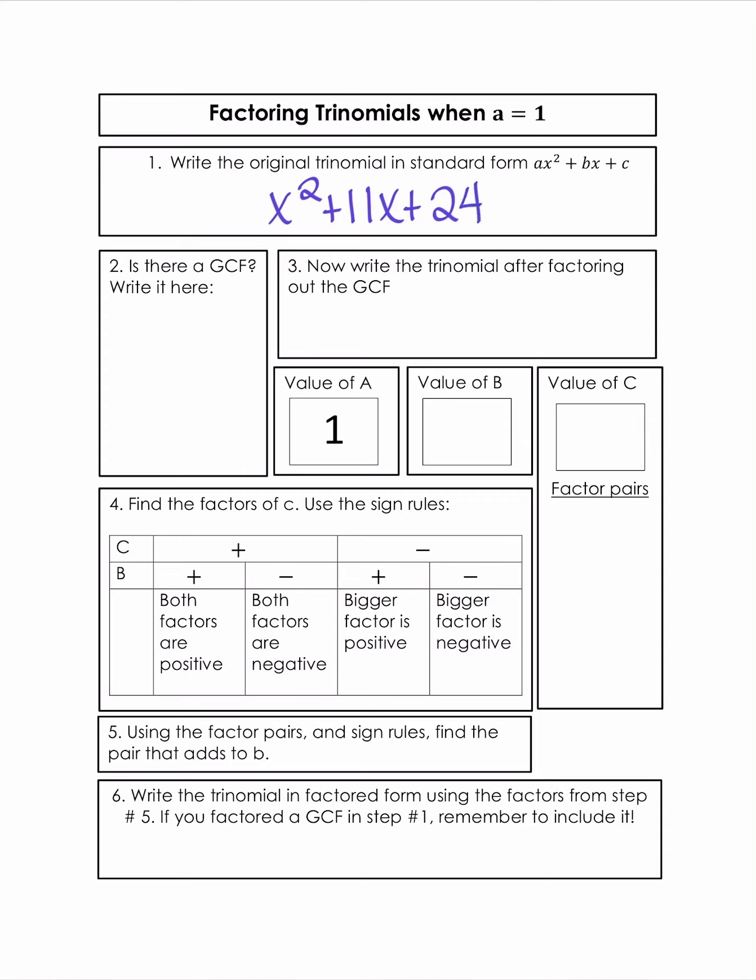So now when we do this, we're going to go ahead and see if there's a GCF. Well, notice that there is no GCF that we can factor out of all three terms. So we're just going to work with x squared plus 11x plus 24.